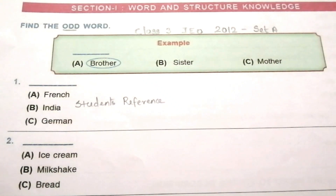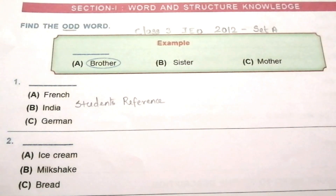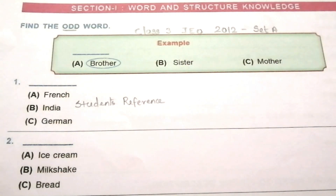Hi, my new students, welcome to Students Reference. If you are new to this channel, please subscribe and click the bell icon to get notifications for upcoming videos. Today we are going to discuss about 2012 Set A IEO question paper for class 3 students. I have already uploaded some other IEO, NSO and IMO question papers for class 3 students. Please go to the playlist in Students Reference and click Olympiad Class 3 to get these question papers.